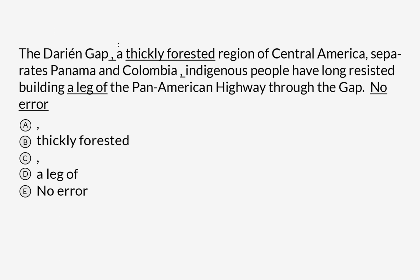The Darien Gap, a thickly forested region of Central America, separates Panama and Colombia. Indigenous people have long resisted building a leg of the Pan-American highway through the gap.